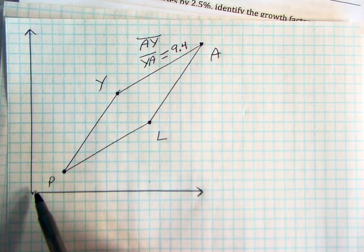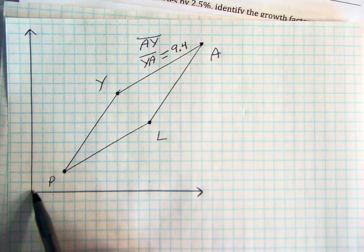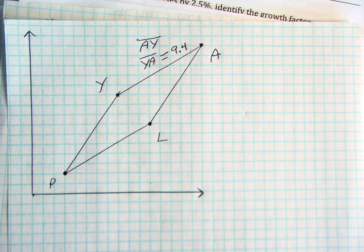To plot P, I use the coordinate 3, 2. For L, I go from the origin, 11 right, up 7, put a dot. Then I connect those four dots with lines to make this quadrilateral.